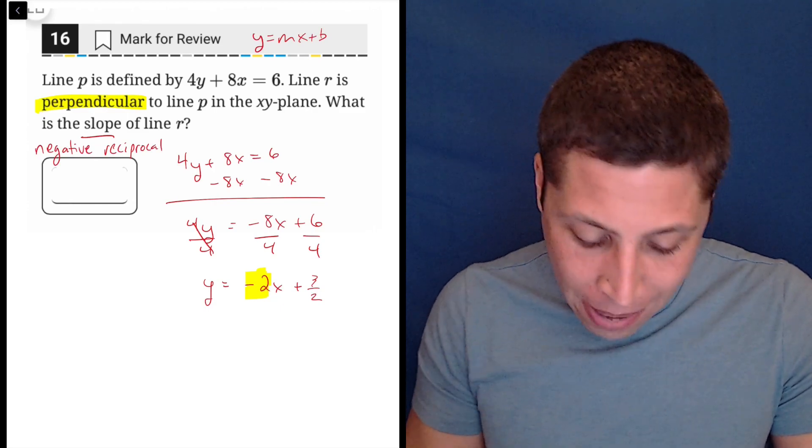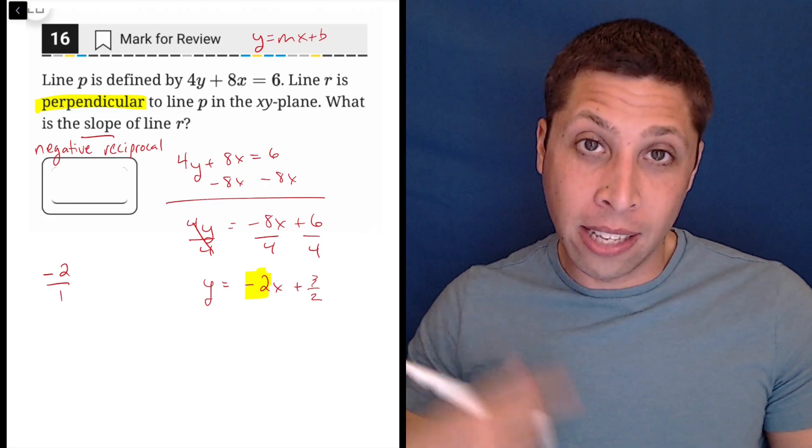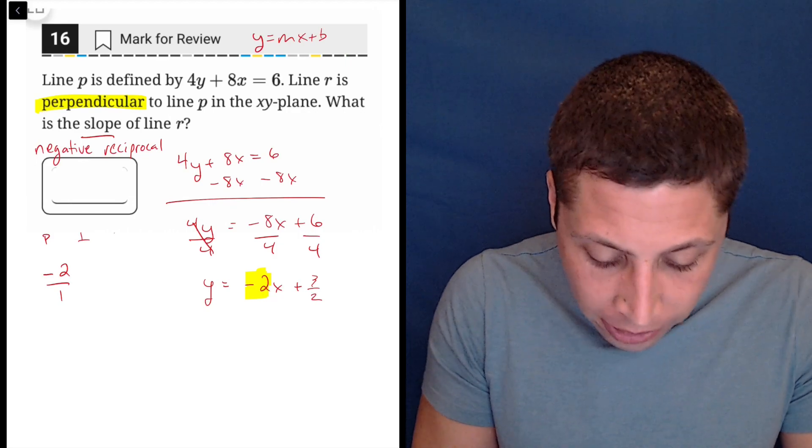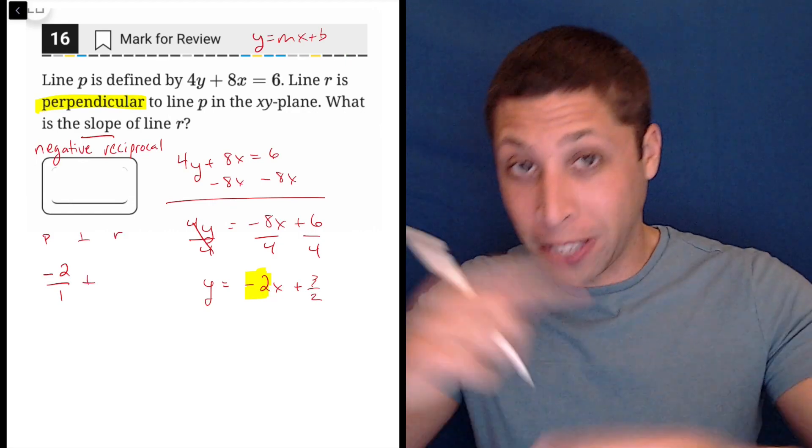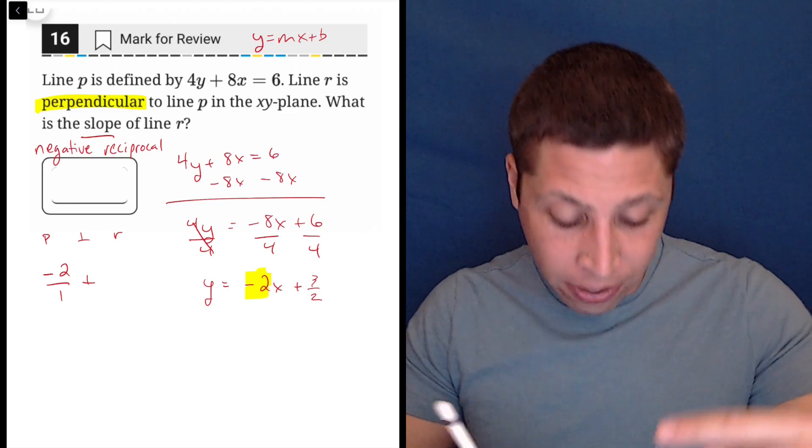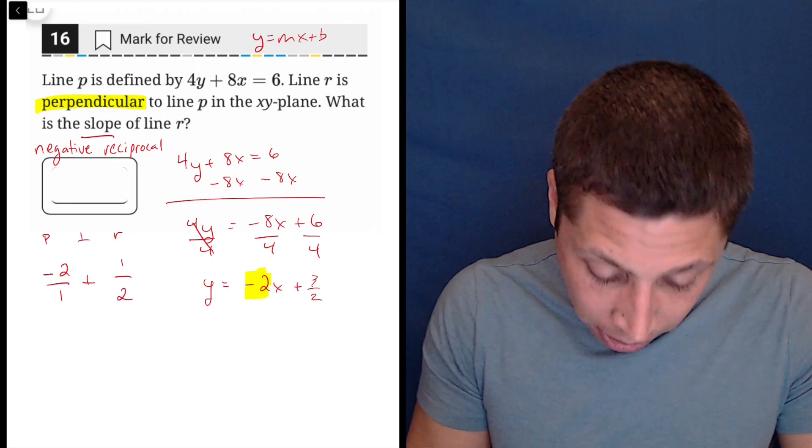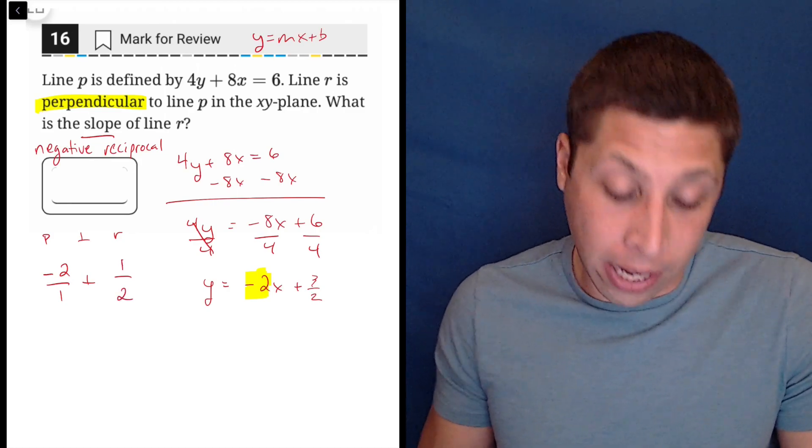That sounds worse than it is. Basically, if negative 2 over 1 is the slope of line P, then to be perpendicular, line R would have to have a slope that is flipped and reversed. So negative means it becomes now positive, and reciprocal means you flip a fraction upside down. So it has a slope of one-half. So that would be our answer.